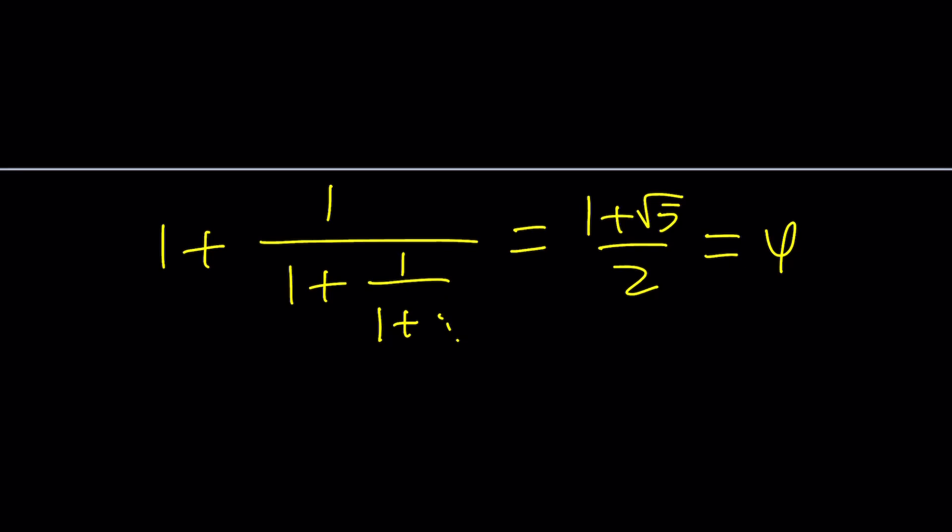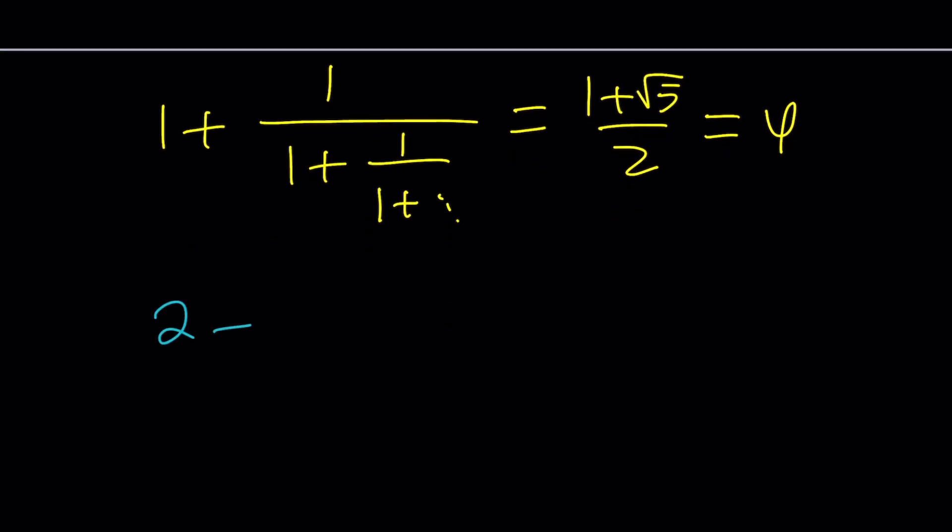So my question is, if we just replace these ones with 2s, are we just doubling this expression so that the value of this becomes 1 plus root 5? So that's going to be my question, and we'll try to answer that question by finding the value of this expression.